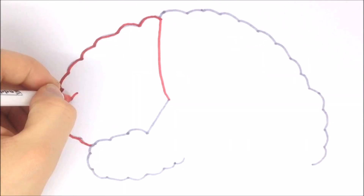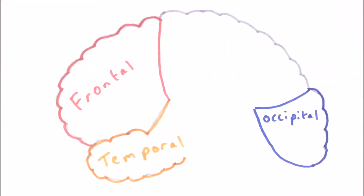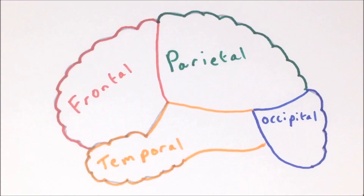The cortex is generally divided into four main lobes in each hemisphere: the frontal lobe at the front, the occipital lobe at the back, the temporal lobe on the side, and the parietal lobe on the top.